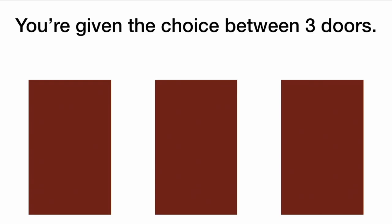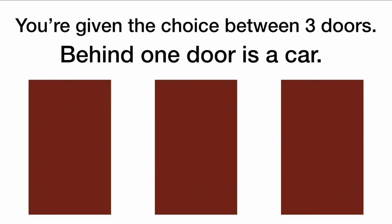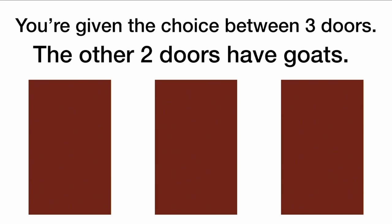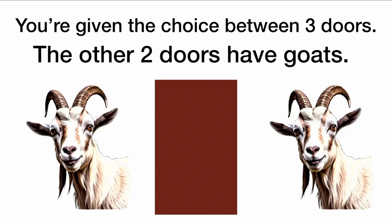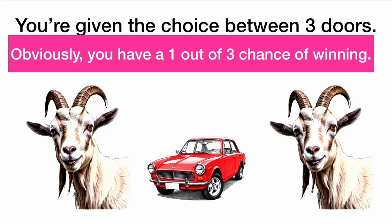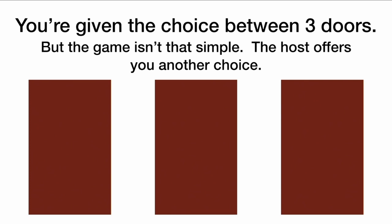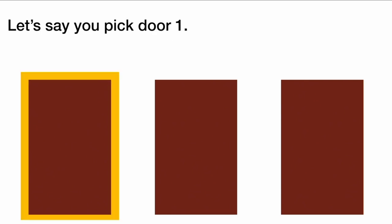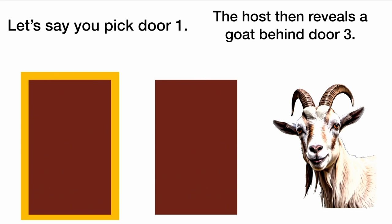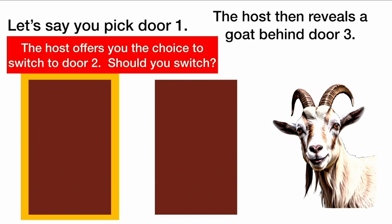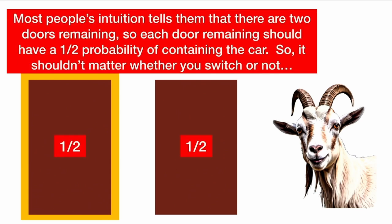On a game show, you're given the choice between three doors. Behind one door is a car. Behind the other two doors are goats. Obviously, you have a one out of three chance of winning and picking the correct door, regardless of where the car is. But the game isn't that simple. The host offers you another choice. Let's say you pick door one. The host then reveals a goat behind door three, and offers you the choice to switch to door two. Should you switch? Most people's intuition tells them that there are two doors remaining, so each door should have a one-half probability of containing the car.